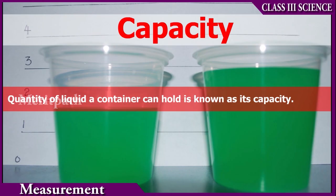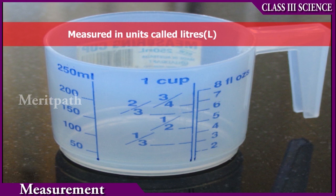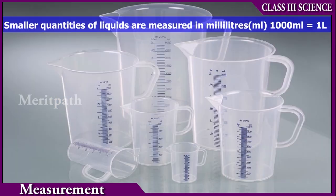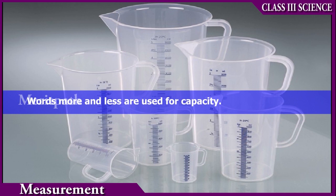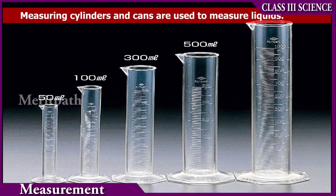Capacity is nothing but the quantity of liquid that a container can hold. It is usually measured in liters. Small quantities of liquids are measured in milliliters. One thousand milliliters is equal to one liter. More and less are used for comparing capacity. Measuring cylinders and cans are used to measure liquids.